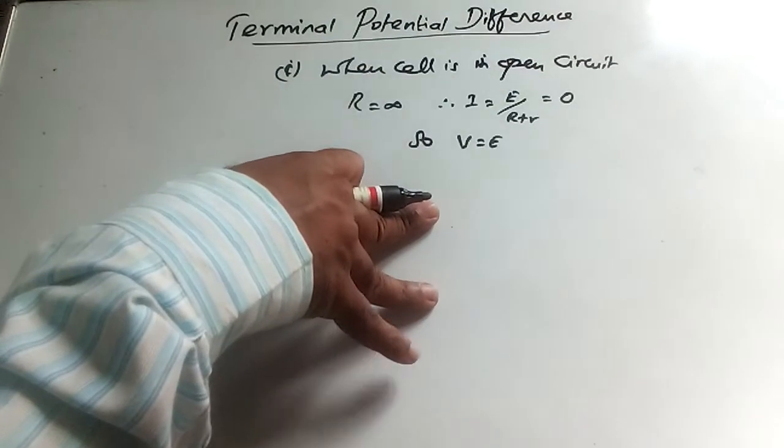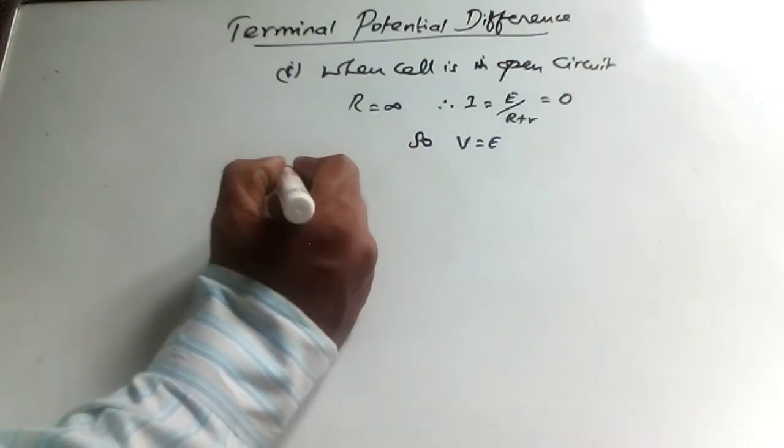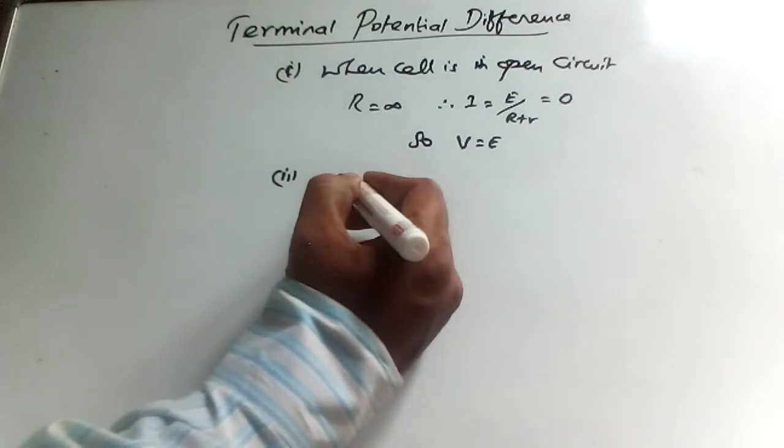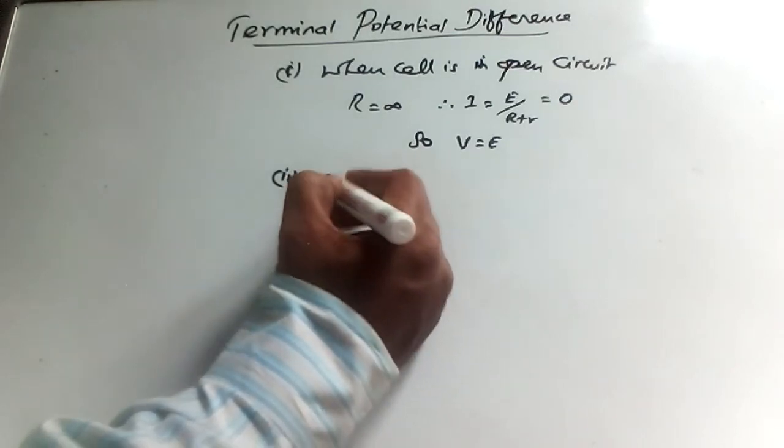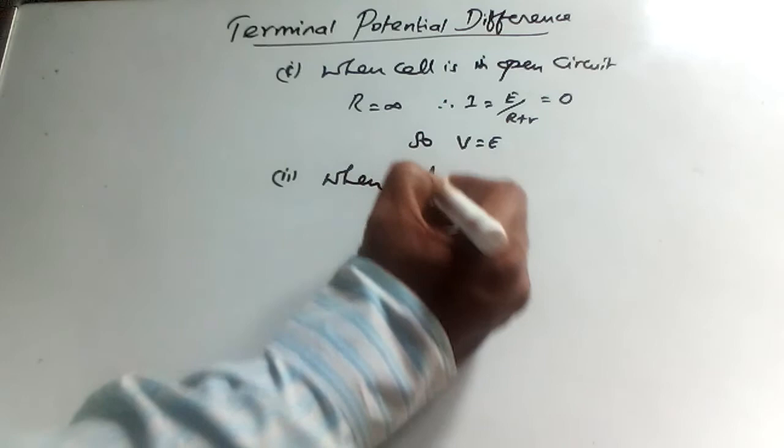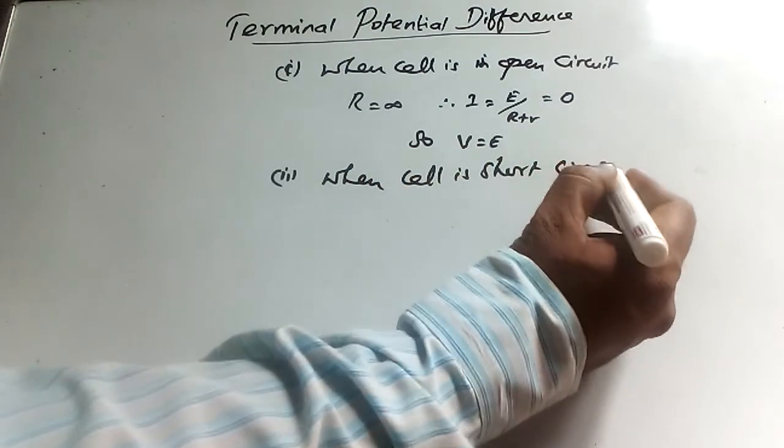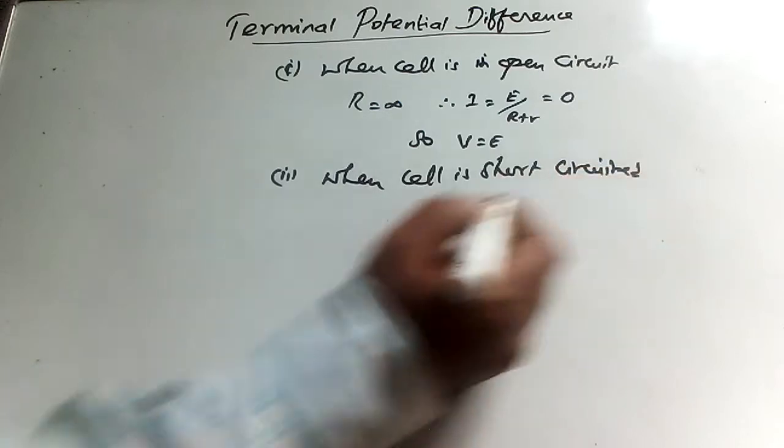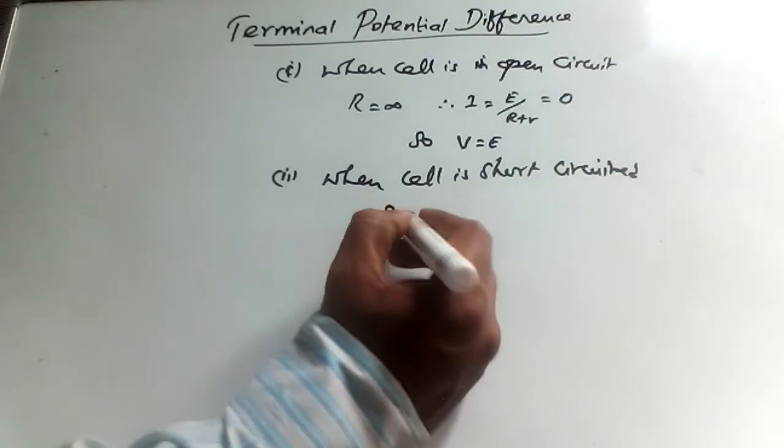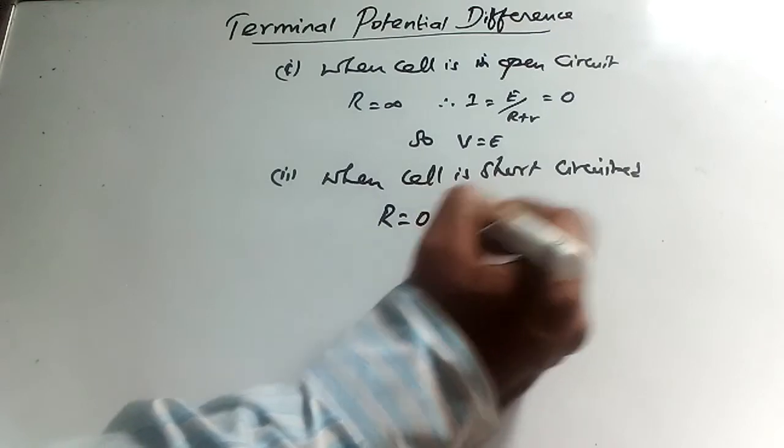And then we can find terminal voltage when cell is short circuited. In short circuit, external resistance R is zero.